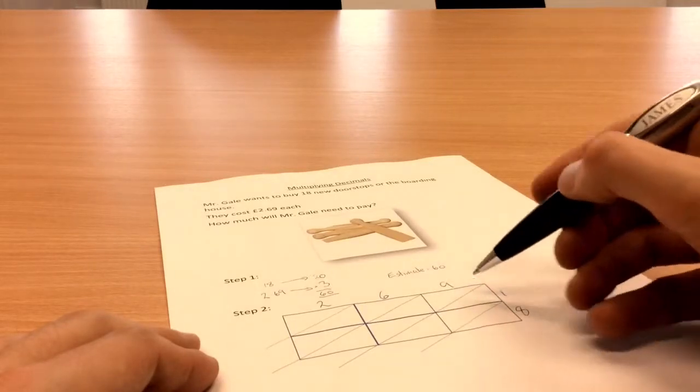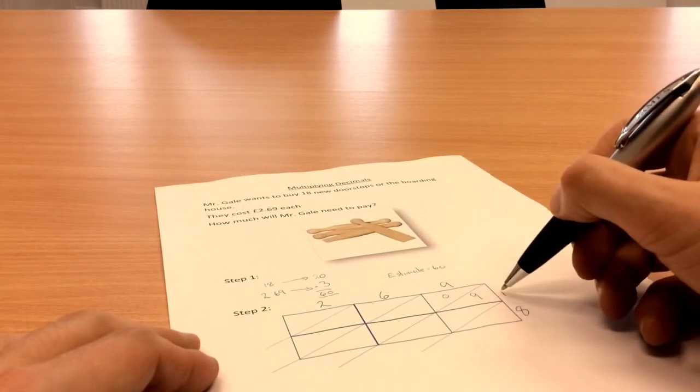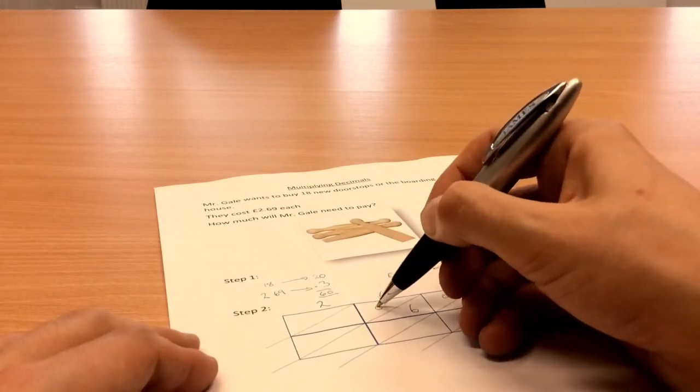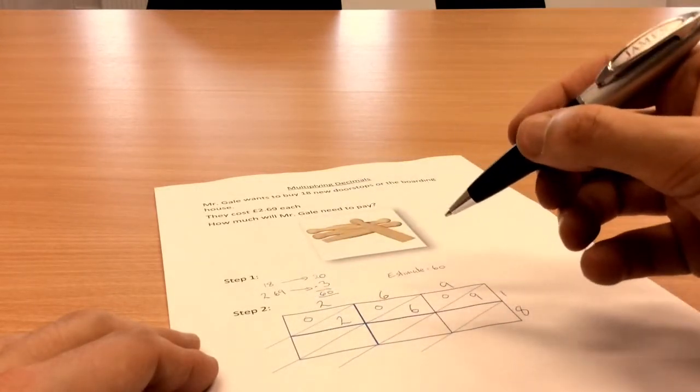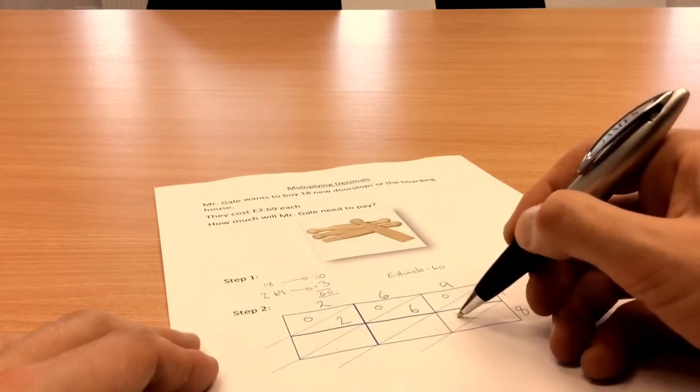So 9 times 1 is 9, and I can put a 0 here if I like. 1 times 6 is 6, and I can put a 0 here if I like. And 2 times 1 is 2, with a 0 here if I like. 9 times 8 is a bit harder. 9 times 8 are 72.